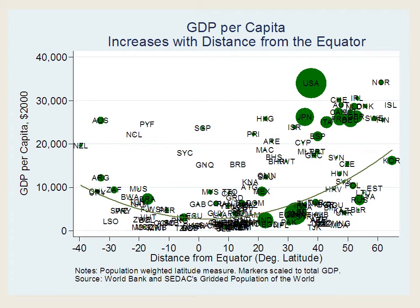You can see the same relationship on this graph, which simply adds circles proportional to total GDP — so you have a lot of very rich countries up here and very poor countries down here. Notice that even going from the equator to a country like Argentina, we're talking about going from $1,000 or so per capita GDP to $10,000. So there are big differences even within this small range. So why does GDP per capita increase with distance from the equator?